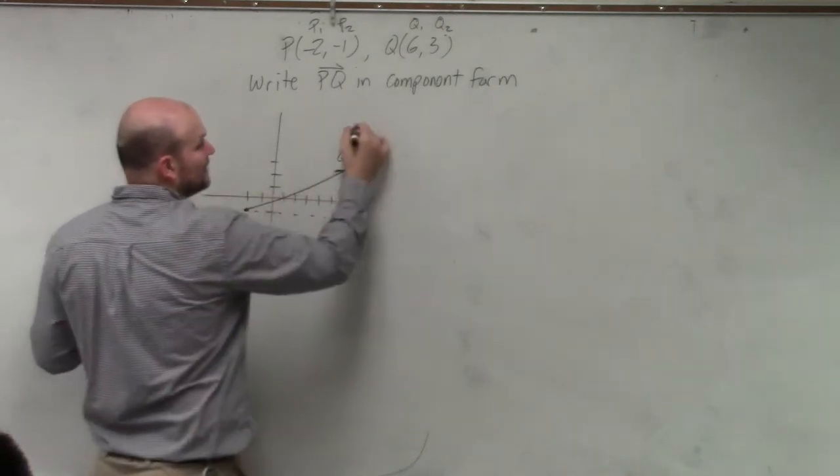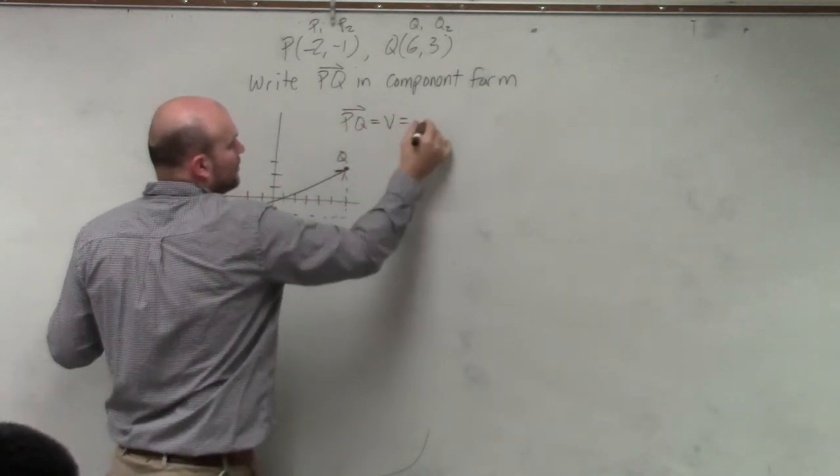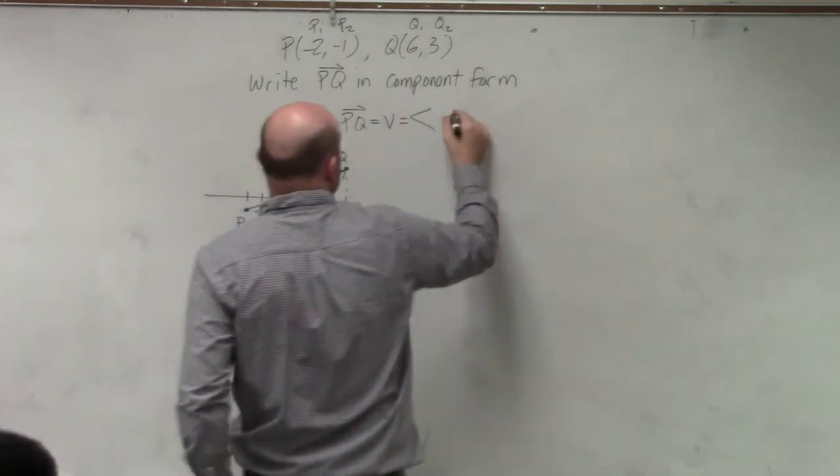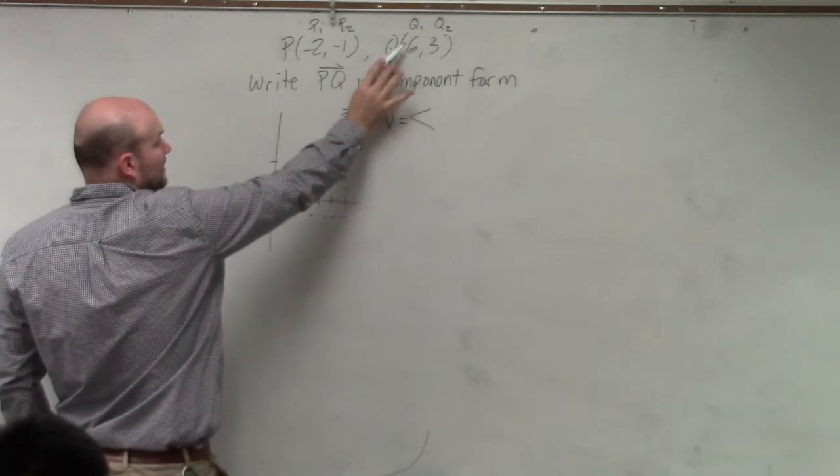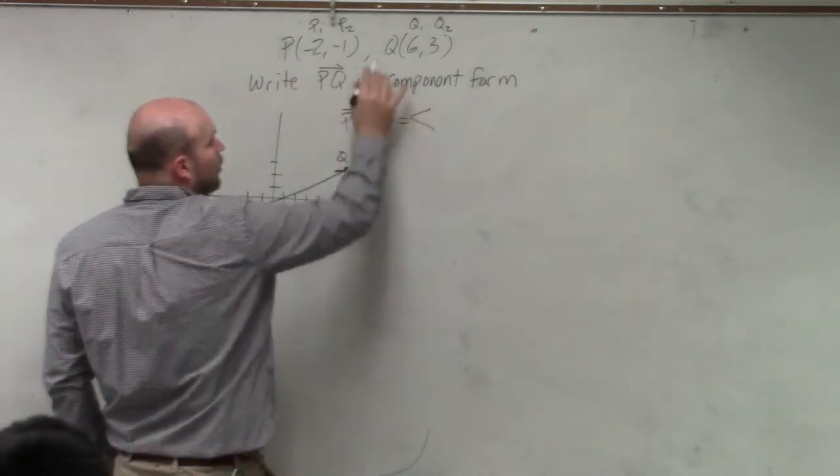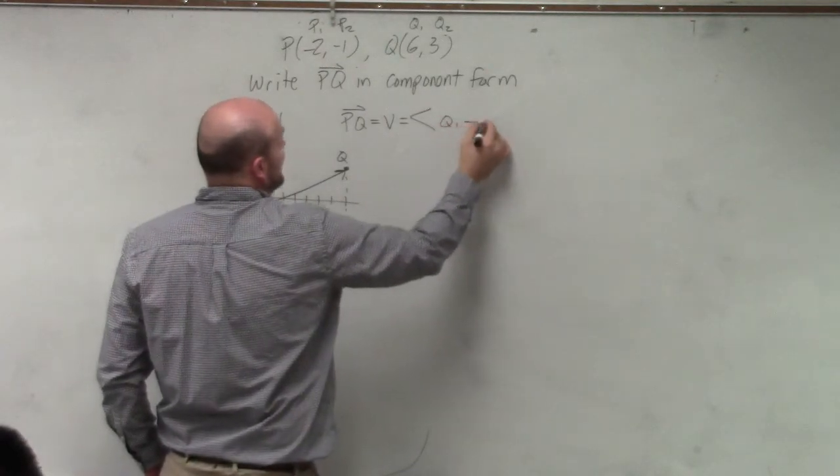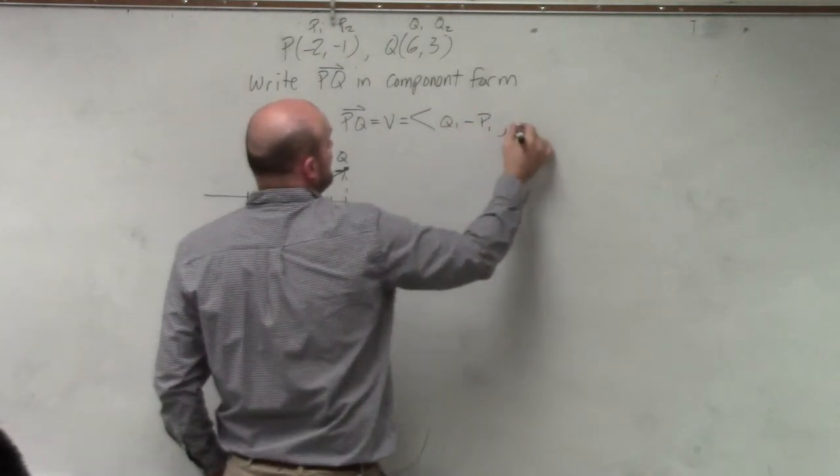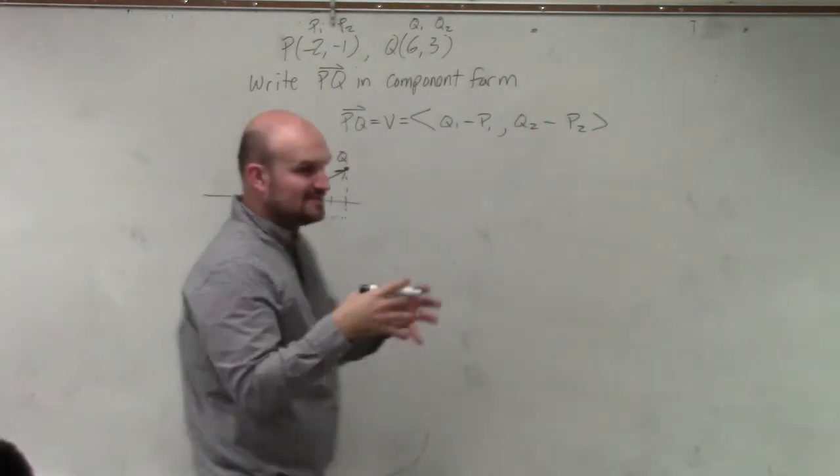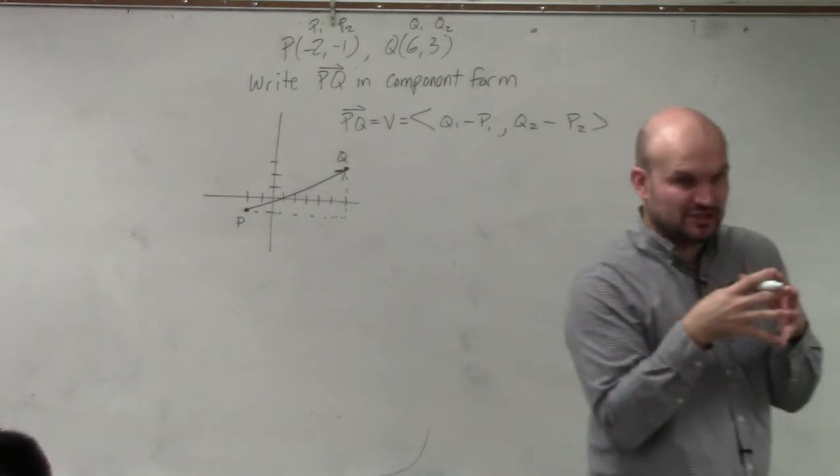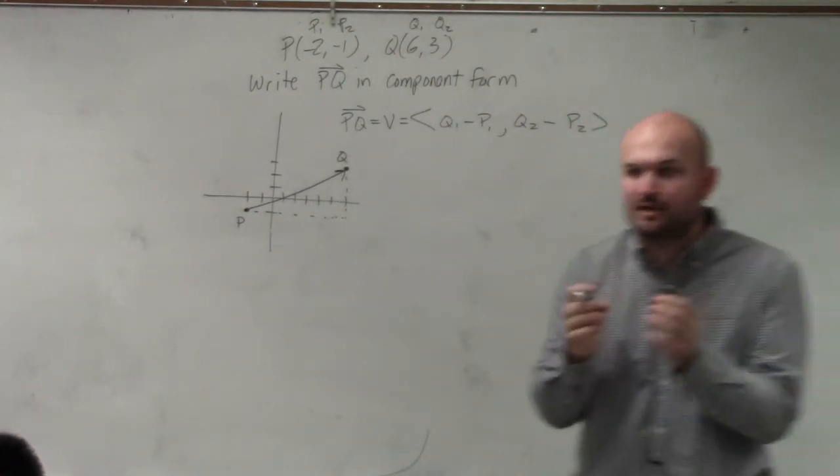So to write this in component form, I'm going to say PQ is equal to V, which is going to equal—what we're going to do is find the change in my x coordinates with the change in my y coordinates. So I'm going to do Q1 minus P1, comma Q2 minus P2. Again, all I'm doing is finding the change in the x and y coordinates.